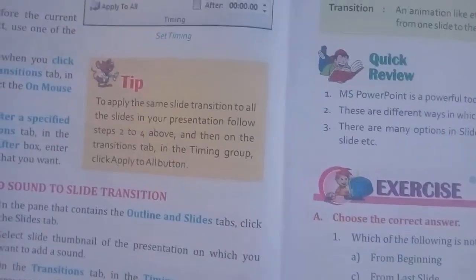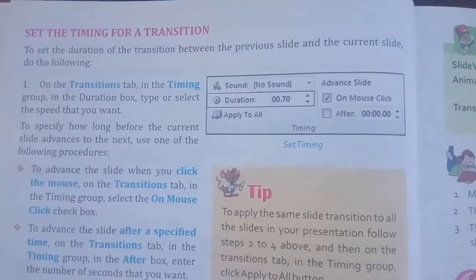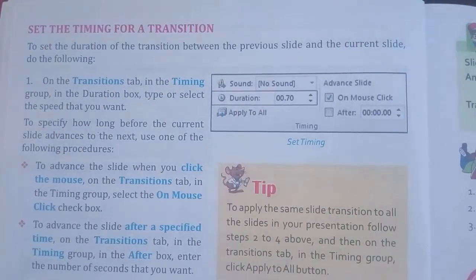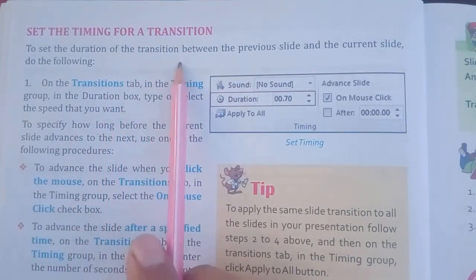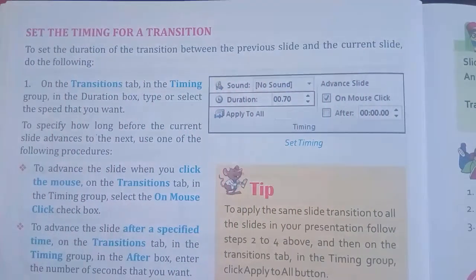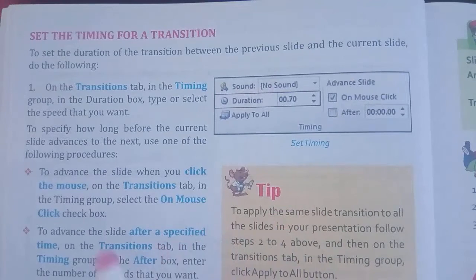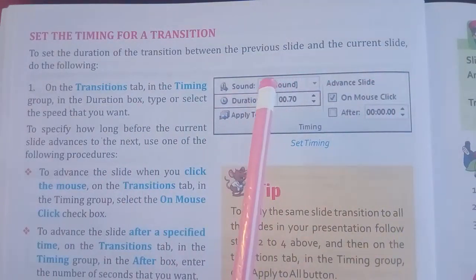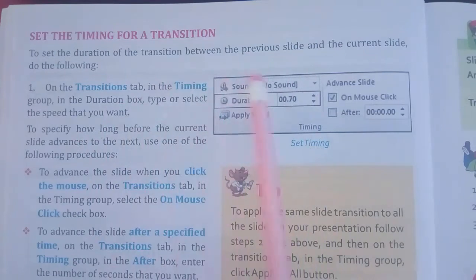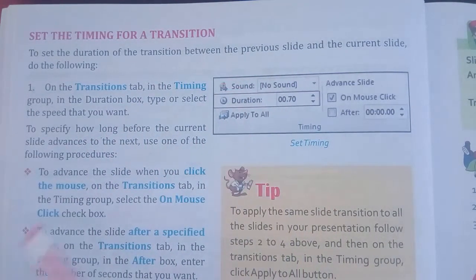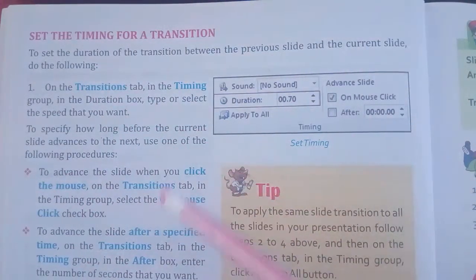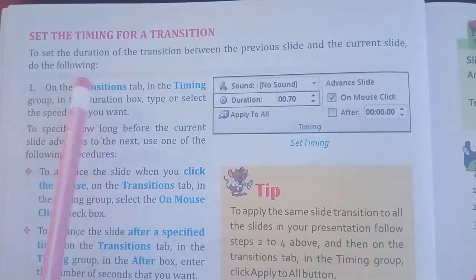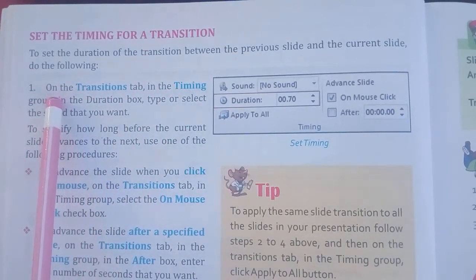Now looking at page number 36: Set the Timing for a Transition. Transition timing lets you change the time duration. To set the duration of the transition between the previous slide and the current slide — for example, between the first and second slide — you set the timing for when the second slide is displayed.